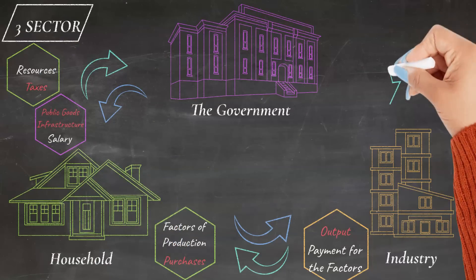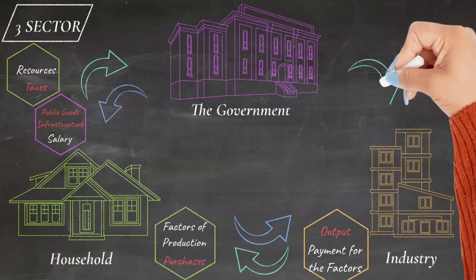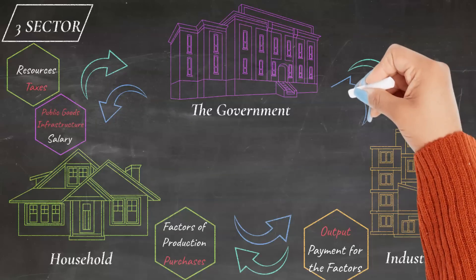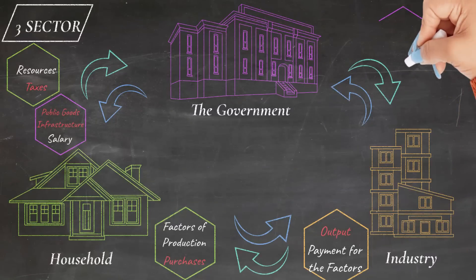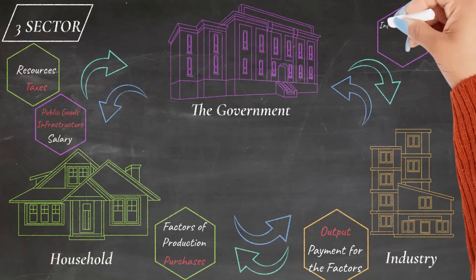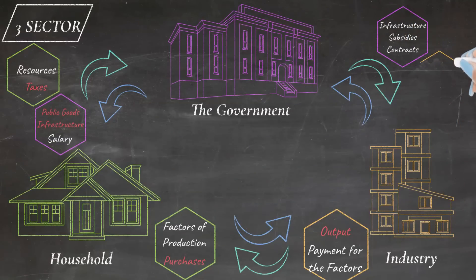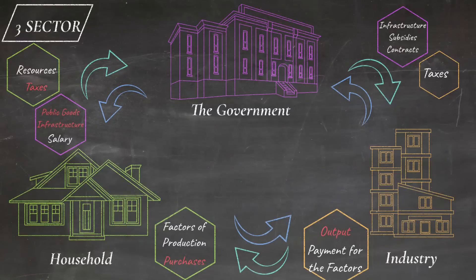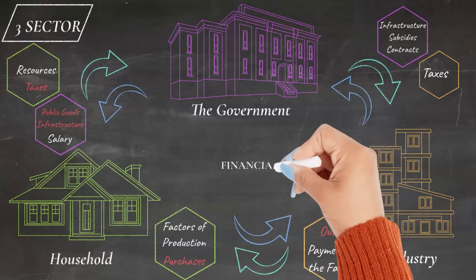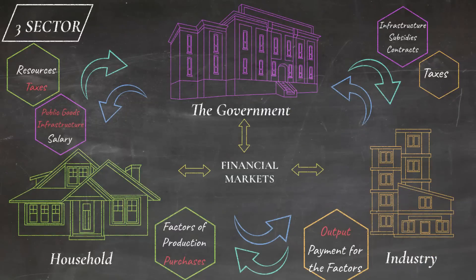Let's see the interactions between the government and the industry. The government provides infrastructure, public goods, subsidies, and offers industrial contracts to the industries, while the industry pays taxes to the government — and this is the real and monetary flow between the two entities. Financial markets also feature in this three-sector model, as the household, the government, and the industry not only invest in the financial markets, but also take funding or loans from the markets for their operations.